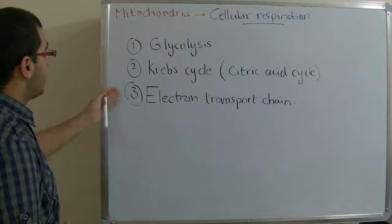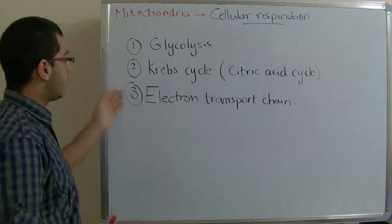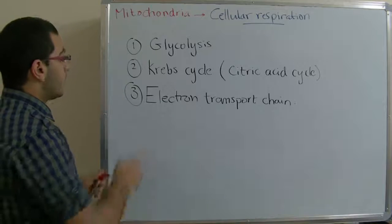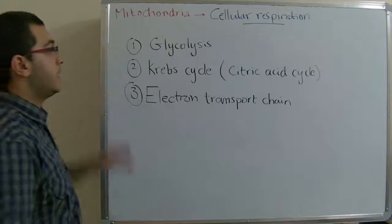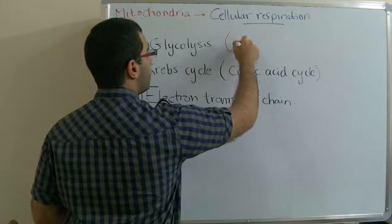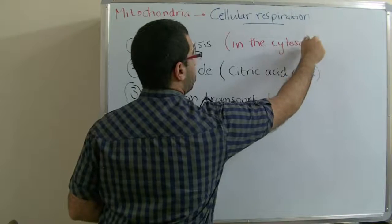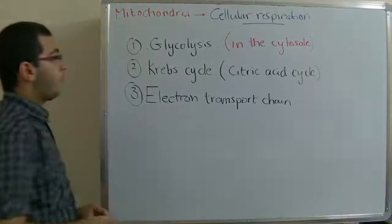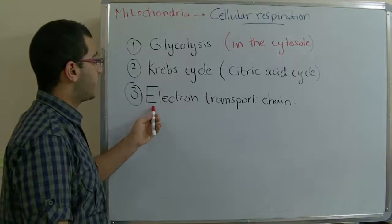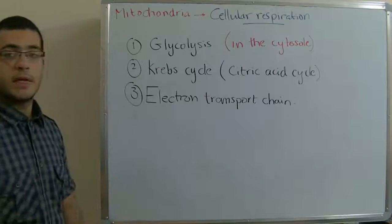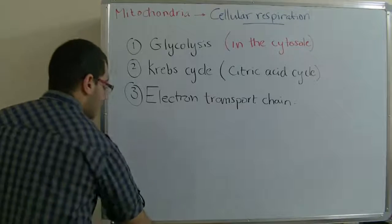So we will talk about each one of those independently in three videos. Now we will talk about the mitochondrion. Glycolysis takes place in the cytosol of the cell which means it takes place outside the mitochondrion, while both the Krebs cycle and electron transport chain both take place in the mitochondrion of the cell.